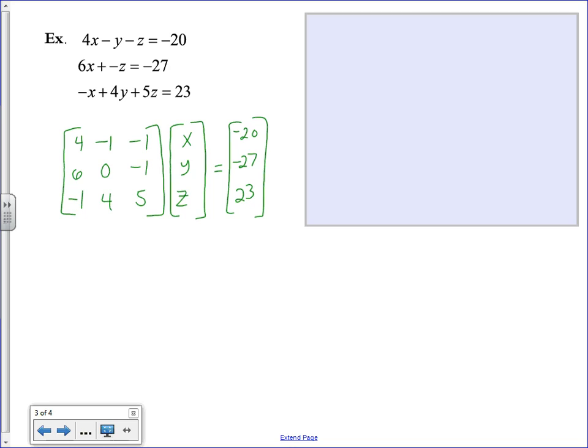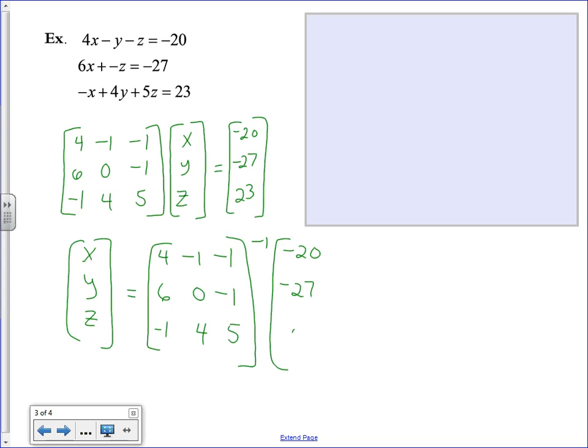Both sides are going to get multiplied by the inverse of the 3 by 3 matrix. So that ultimately, X, Y, Z equals the inverse of this matrix. And it's important to show exactly what you're doing. Even though you're going to use a calculator for the final step, you should show which multiplication problem you're doing. So I can see that you're doing it in the correct order.